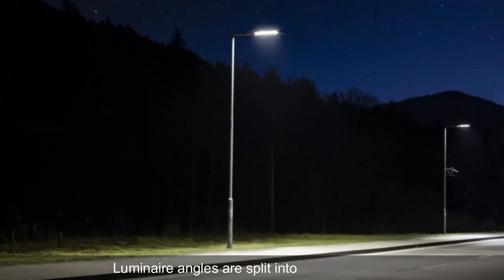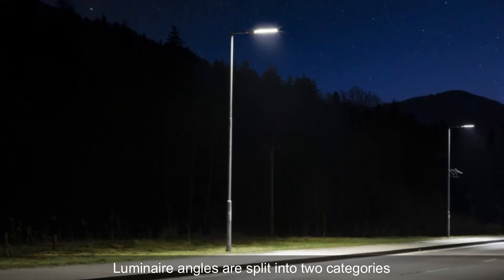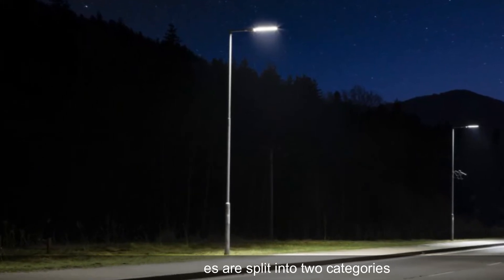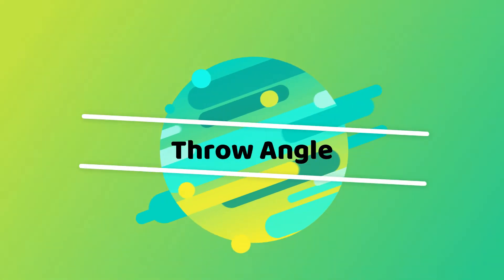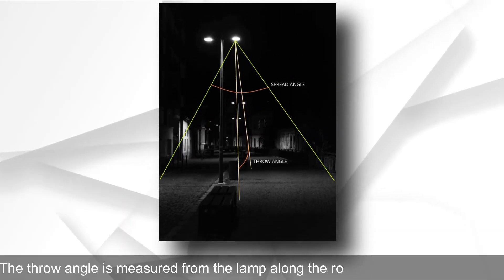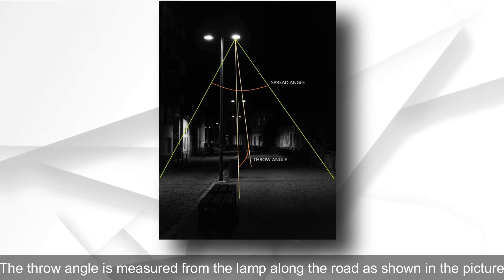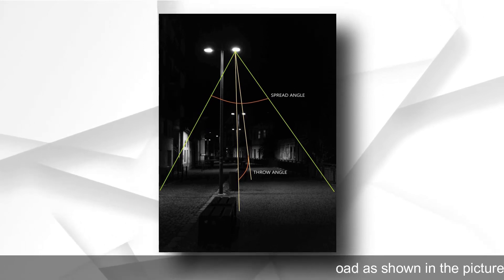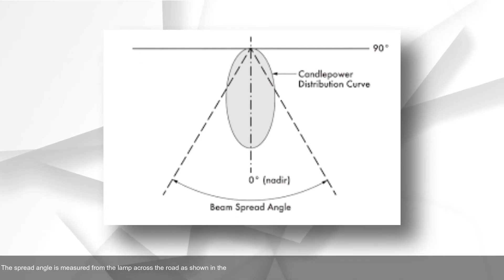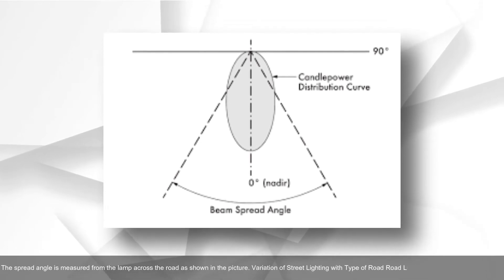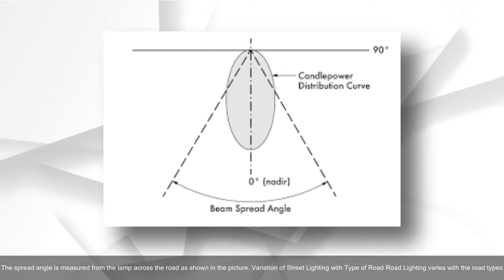Luminaire angles are split into two categories. The throw angle is measured from the lamp along the road, as shown in the picture. The spread angle is measured from the lamp across the road, as shown in the picture.